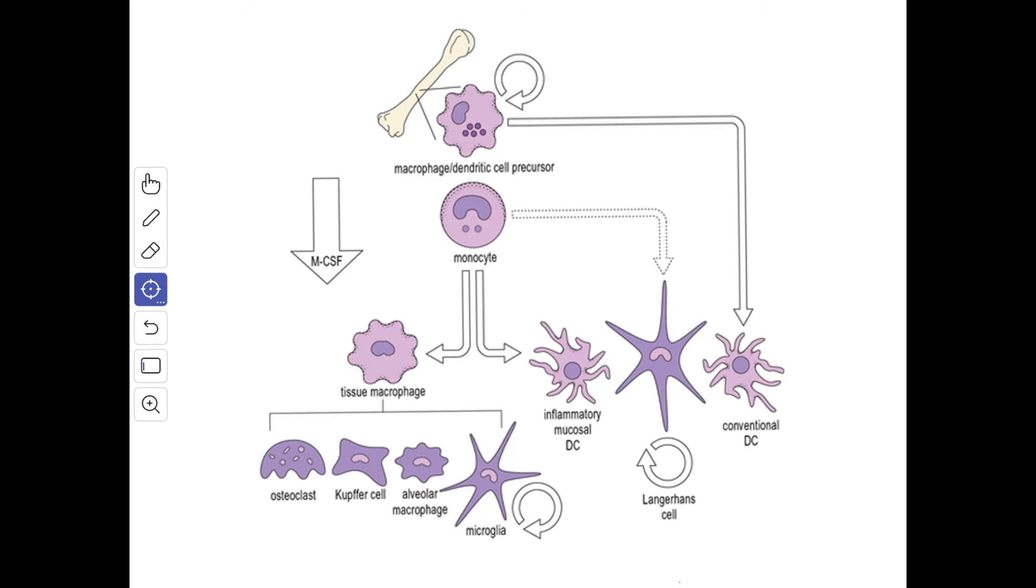Certain T lymphocytes produce macrophage activating factors including interleukin-2 which influence the activity of the macrophages. These stimulated macrophages synthesize and secrete cytokines which in turn stimulate the proliferation and the maturation of lymphocytes.